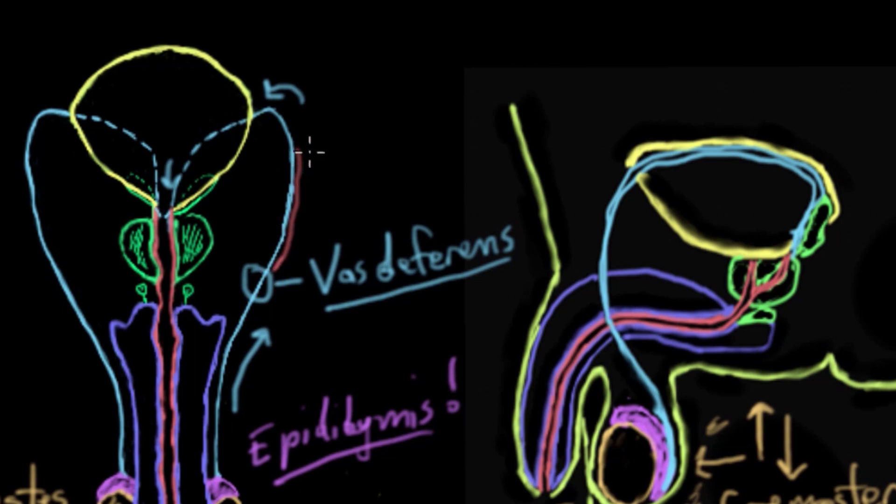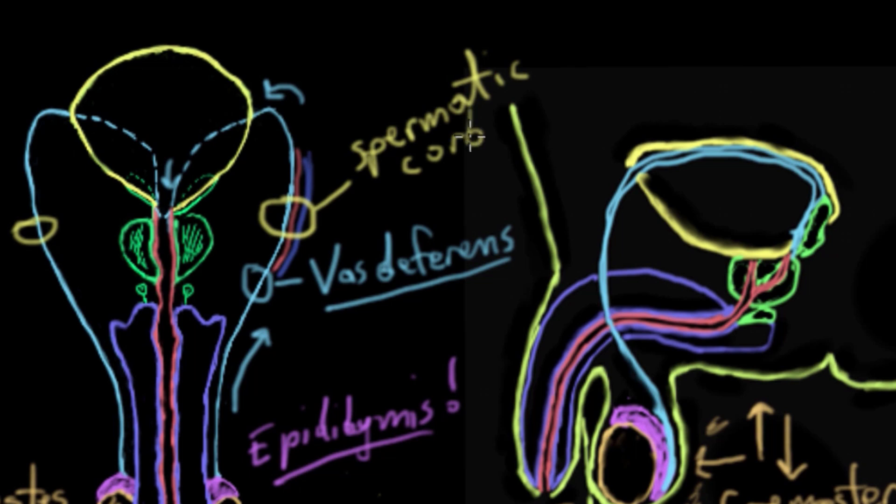Inside the spermatic cord, you actually have an artery that serves the testes, and you also have a vein that serves the testes. So all of that together, and you have that on either side, that's called the spermatic cord.